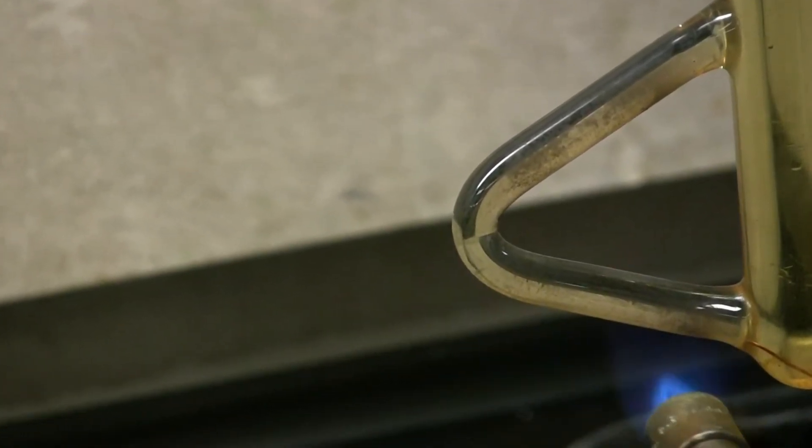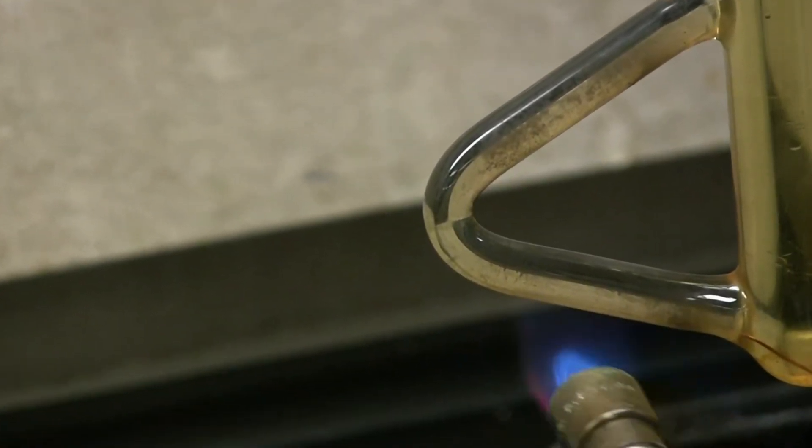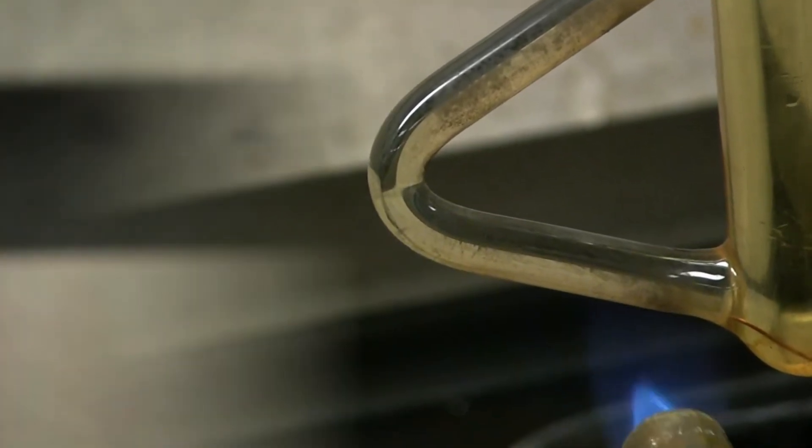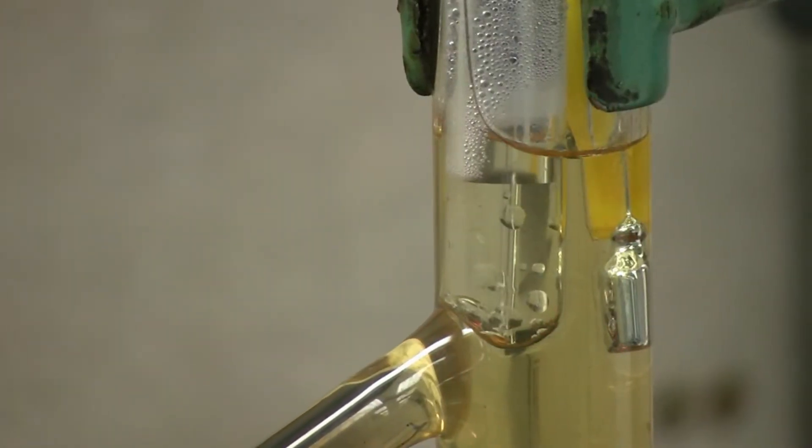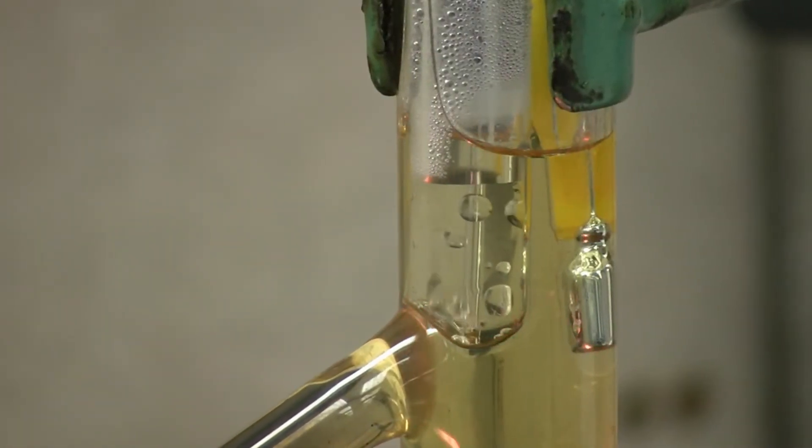You will now need to wave the Bunsen burner over the lower end of the Thiele tube to ensure even heating. Once the sample has begun to boil, remove the flame from the lower end of the Thiele tube and allow it to cool.